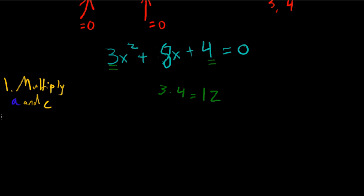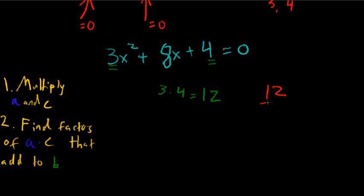Alright, next what you want to do is you want to find factors of a times c that add to b. Okay, so this is a tricky step. You find factors of this number, a times c, that will add to b. We were talking about 12 earlier, which is why I kind of chose 12. So this was kind of engineered. So factors of 12 that add to b.